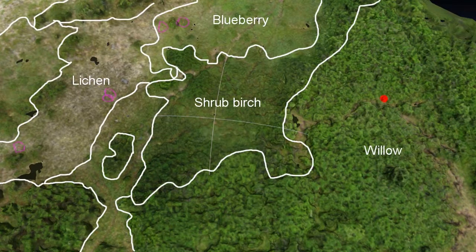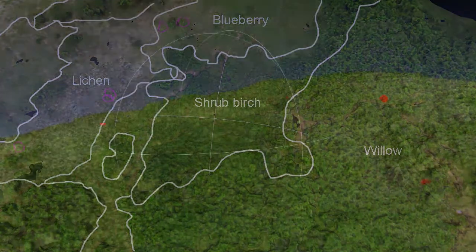The color and surface texture allow a rough classification of the vegetation, which varies from reindeer lichen to very low blueberries to birch shrubs to head-high willow.